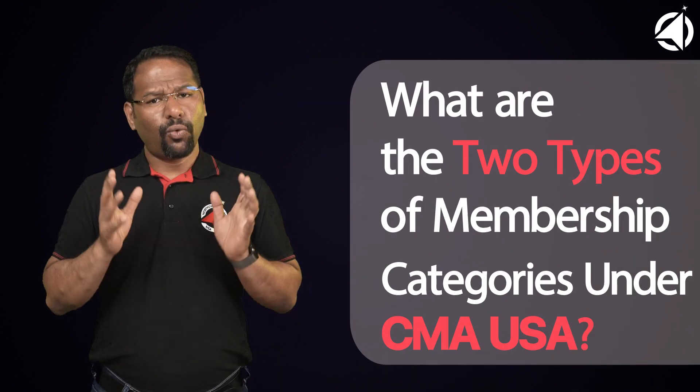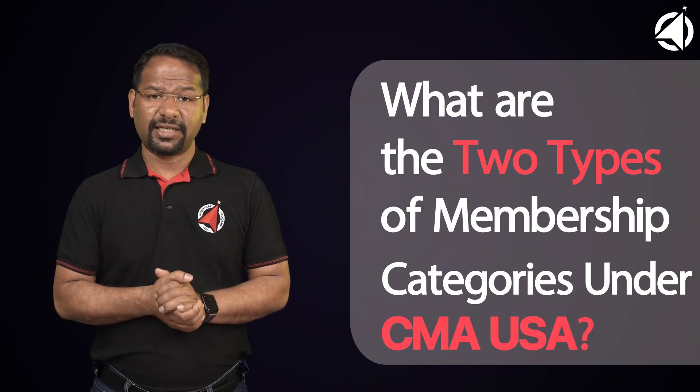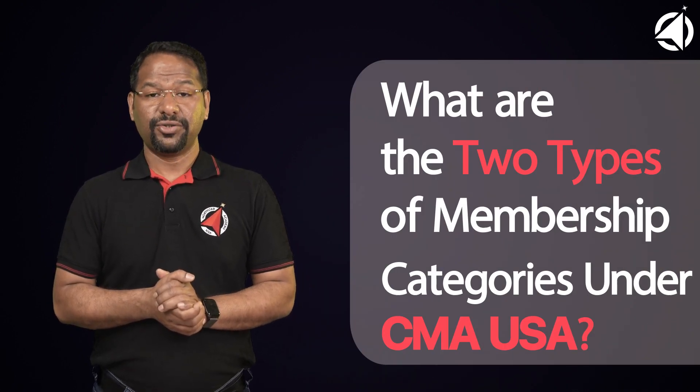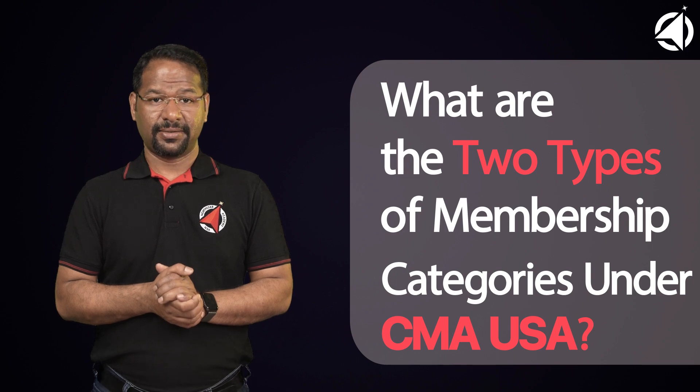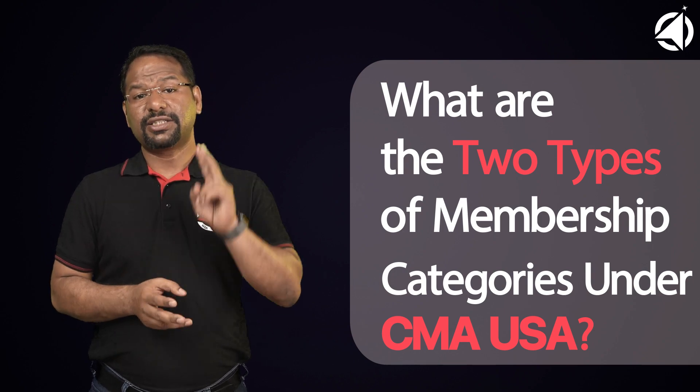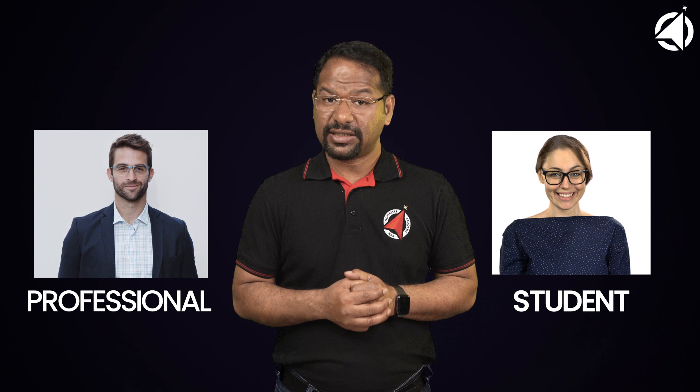What are the two types of membership categories under the CMA USA? CMA USA has two types of membership: the student and the professional. Let's first understand how these are classified.